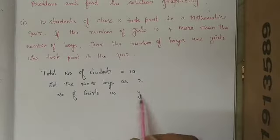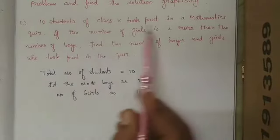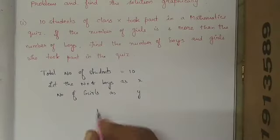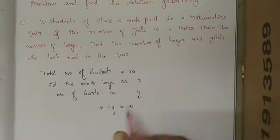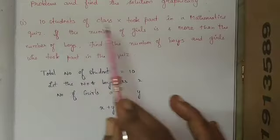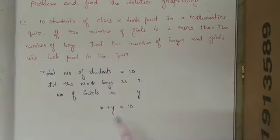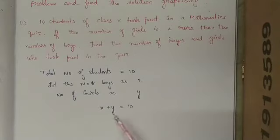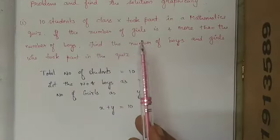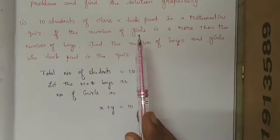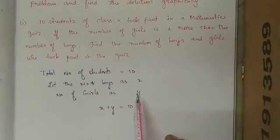y number of girls and x number of boys have participated. How many of them participated in the quiz? Totally 10. So both x and y together equal 10. This gives us the first equation from the statement that 10 students took part — boy and girl combined. So the number of girls is y.